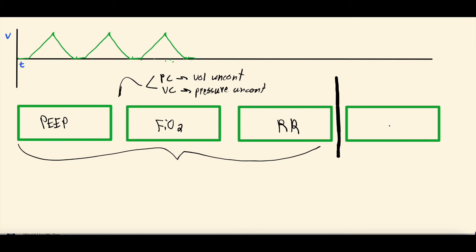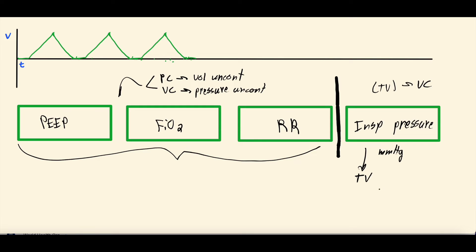The setting that differs between the two modes is the fourth one. In pressure control, you're setting the inspiratory pressure, whereas in volume control you're setting the tidal volume — the cc's of air pushed into the lungs with each breath. In volume control, you control the volume and the uncontrolled variable is the pressure. In pressure control, you control the pressure and the uncontrolled variable is the volume.